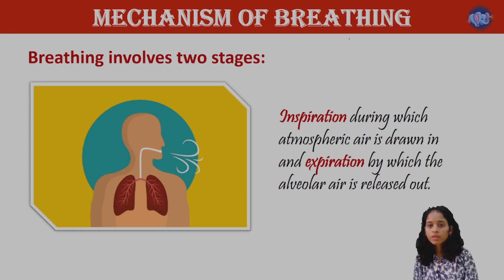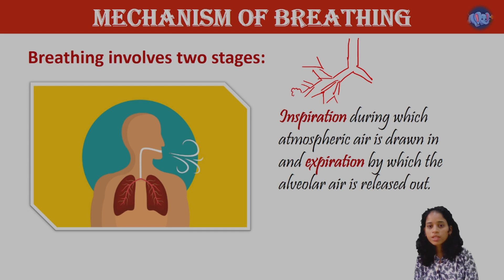The trachea, or windpipe, branches into primary bronchi. The primary bronchi form secondary bronchi, and the secondary bronchi form tertiary bronchi. The bronchioles form smaller terminal branches. The terminal bronchioles lead to alveoli, which are irregular wall, sac-like structures.